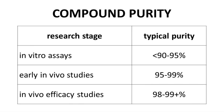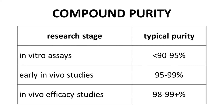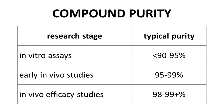The purity of compounds that are tested and studied during drug discovery can vary based on the research stage. Early in vitro assays can be performed on lower purity material and still generate useful data. Once a LEAD reaches early in vivo studies like PK studies, synthesis and purification within the LEAD series is likely well established. Purity of compound batches will be higher, generally 98% or 99% pure for in vivo efficacy or safety studies.